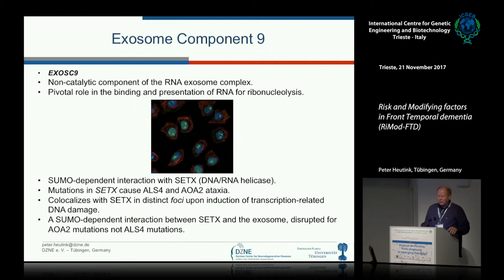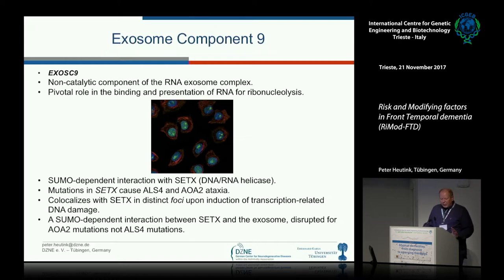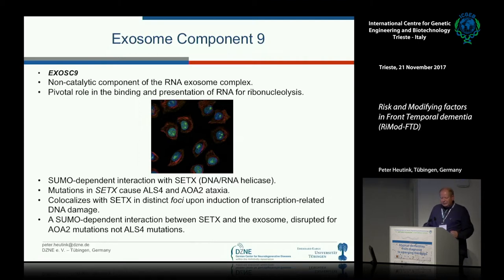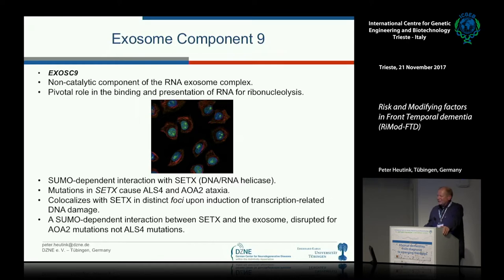One example of an interesting candidate gene is exosome component 9, a component of the RNA exosome complex that plays a role in binding and presenting RNA for degradation. It binds to a protein called SCTX, predicted to be a helicase. Mutations in these genes are associated with ALS4 or an ocular form of ataxia. Under cellular stress that stops transcription, it co-localizes with SCTX and forms distinct foci. We think this is an interesting candidate gene to follow up, and early experiments with collaborators here locally are ongoing, though not yet convincing.